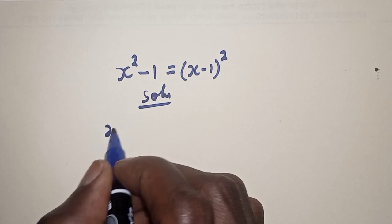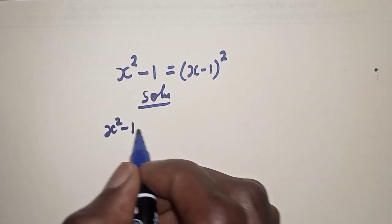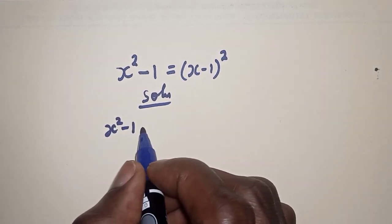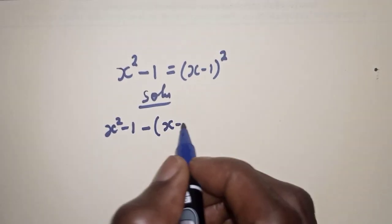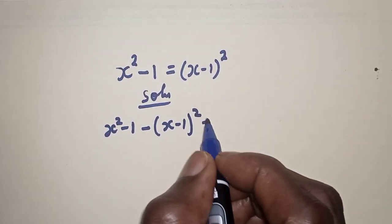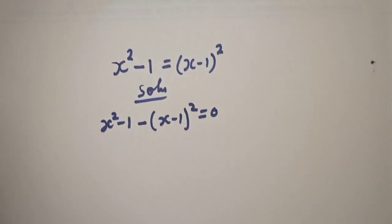Here is s squared minus 1. Let's bring this to this side: minus s minus 1 all squared is equal to 0.